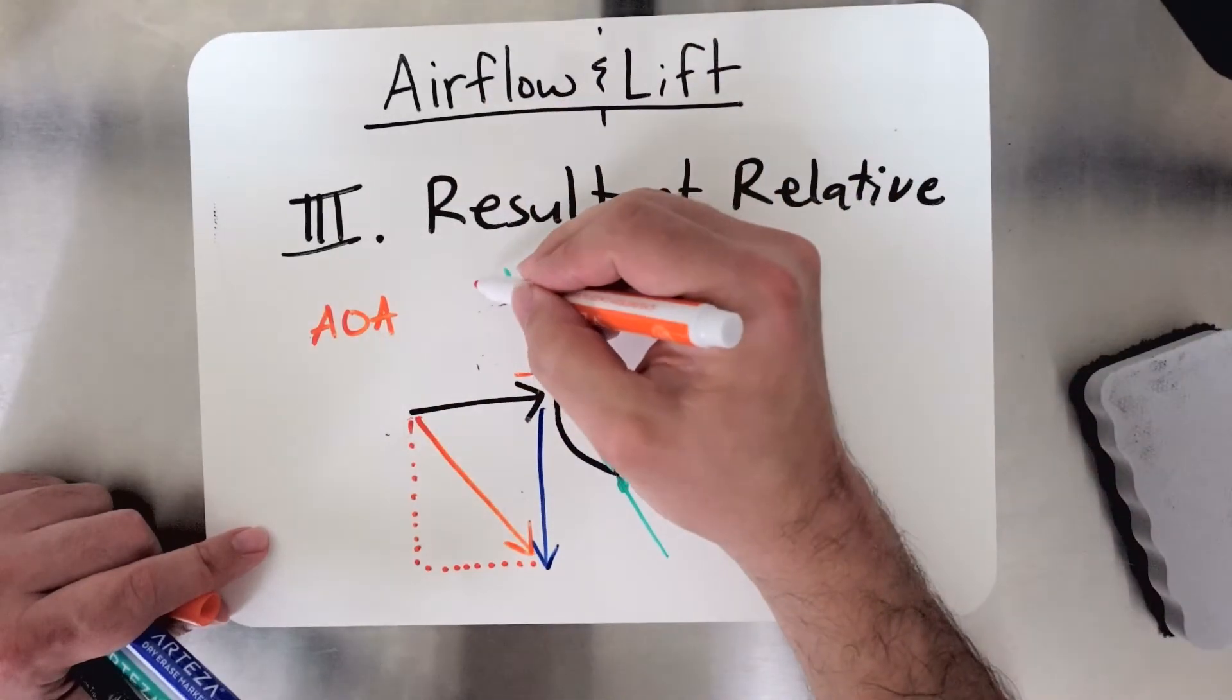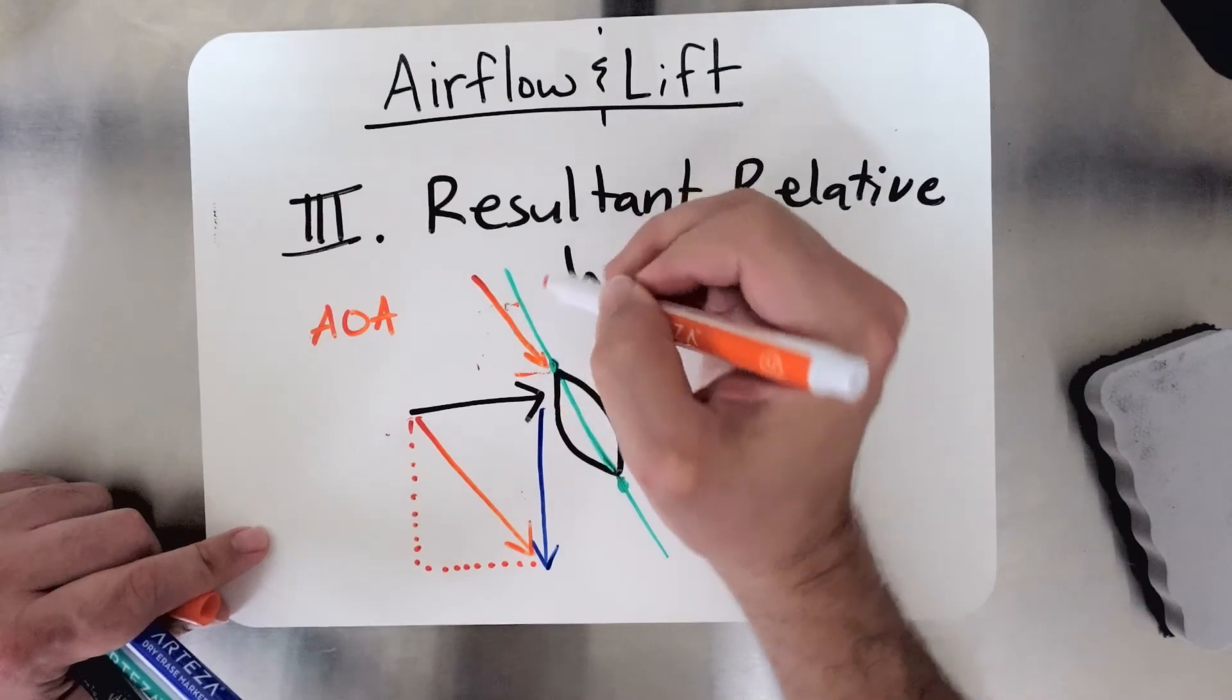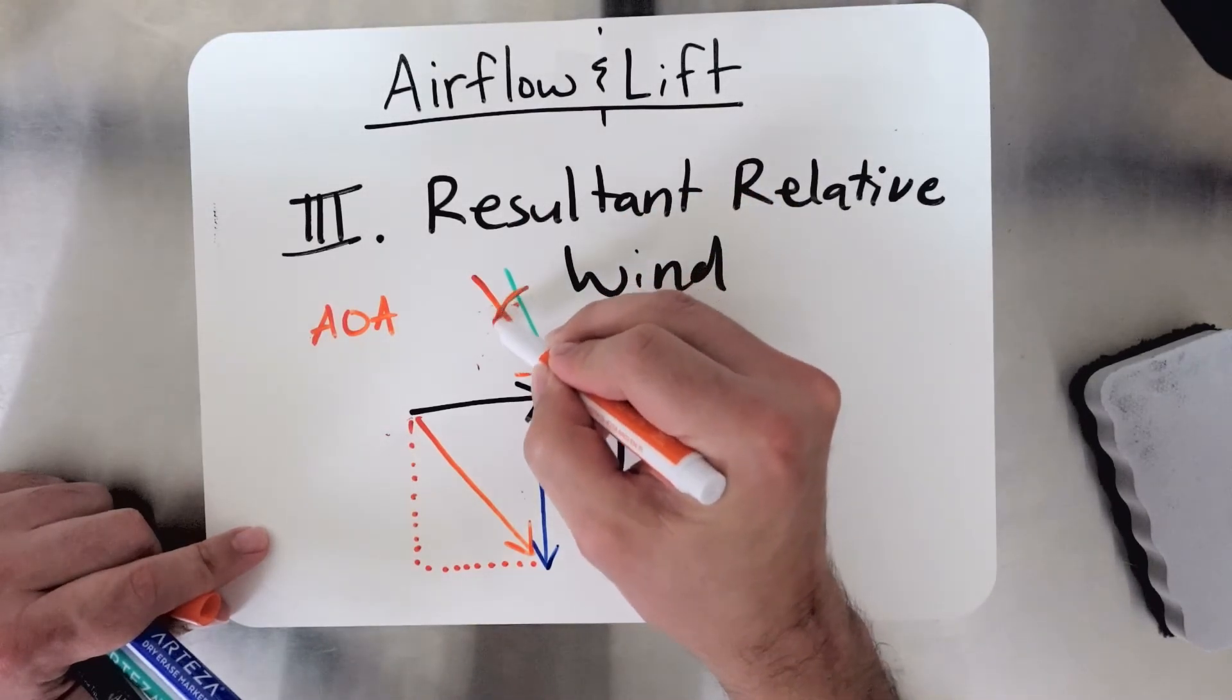If I translate this up here, I'm going to get something that looks more like this. Now my angle of attack is much smaller.